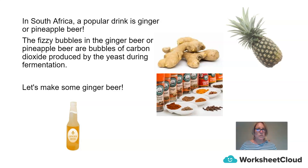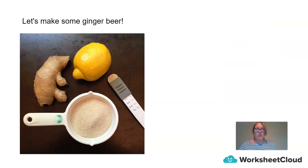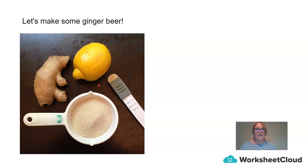Generally, what you'd need to make some ginger beer is a stick of ginger, but you can also buy it as a spice bottle. Some lemon will give it a bit of flavour. You'll also need some yeast and some sugar, and you'll need to mix all of these together in a container with some water. I hope you have fun experimenting making ginger beer.